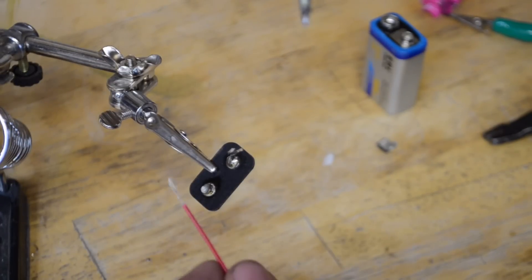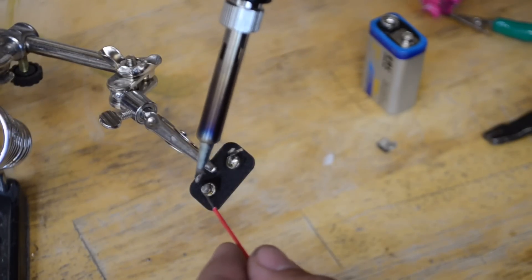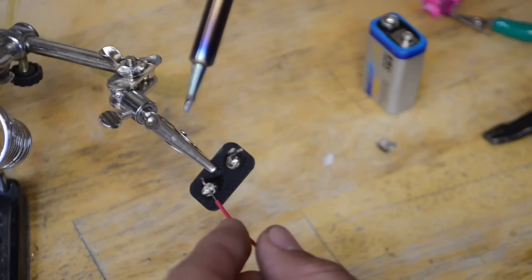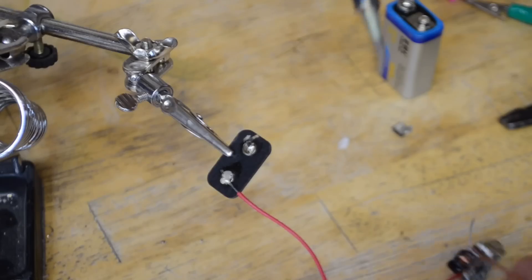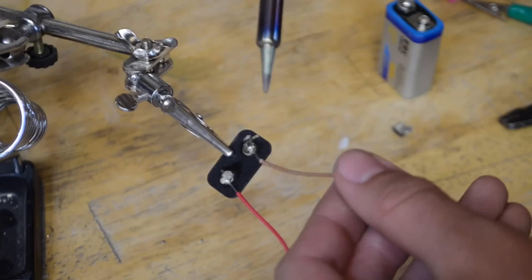Now that we've done that, let's go ahead and solder this red wire to this one. Now let's go ahead and solder the brown wire over here to the other side.